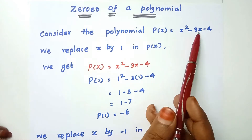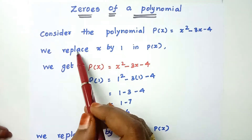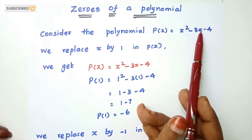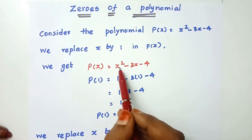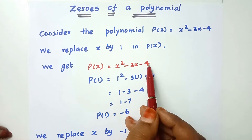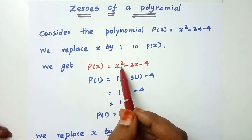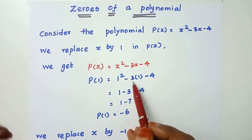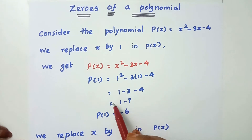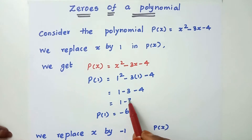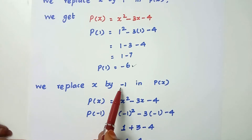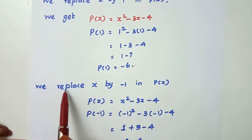Now, we will replace x by 1 in p of x. So, p of 1 equals 1 squared minus 3 into 1 minus 4. That gives us 1 minus 3 minus 4, which equals minus 6. So p of 1 is equal to minus 6.